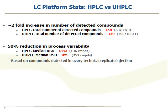The other really major improvement we were able to get out of switching to the UHPLC was a dramatic reduction in process variability. Just by making this upgrade to the LC system, we were able to decrease process variability by 50%.